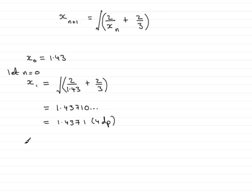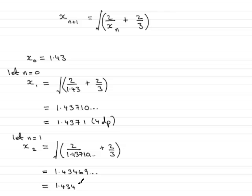And if I want the next approximation x2, then I just let n equal 1. When n equals 1, you have x1 plus 1, that's x2, equals the square root of 2 over x1, and x1 we know is 1.43710 and so on, plus two thirds. And again, if you work this out on your calculator, you should find you get 1.43469 and so on. When this is rounded to four decimal places, it's just 1.4347 to 4dp.